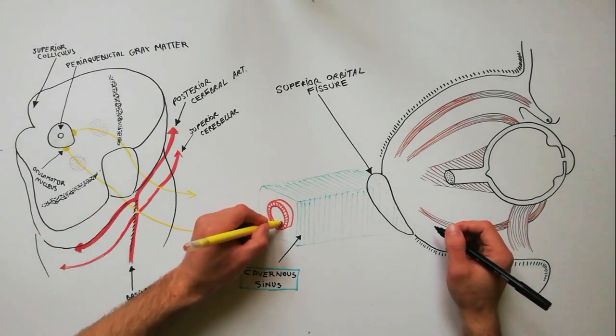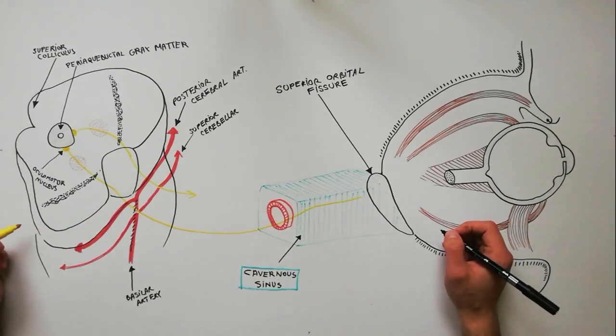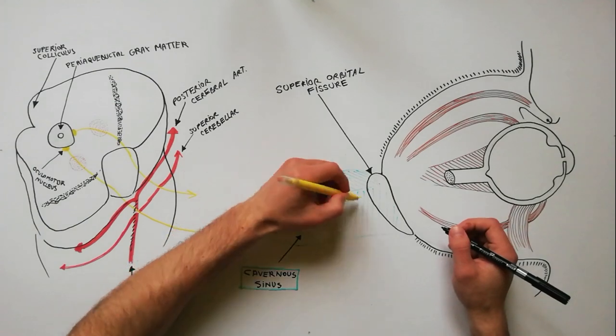The nerve enters the lateral wall of the cavernous sinus, traversing it in its superior part.